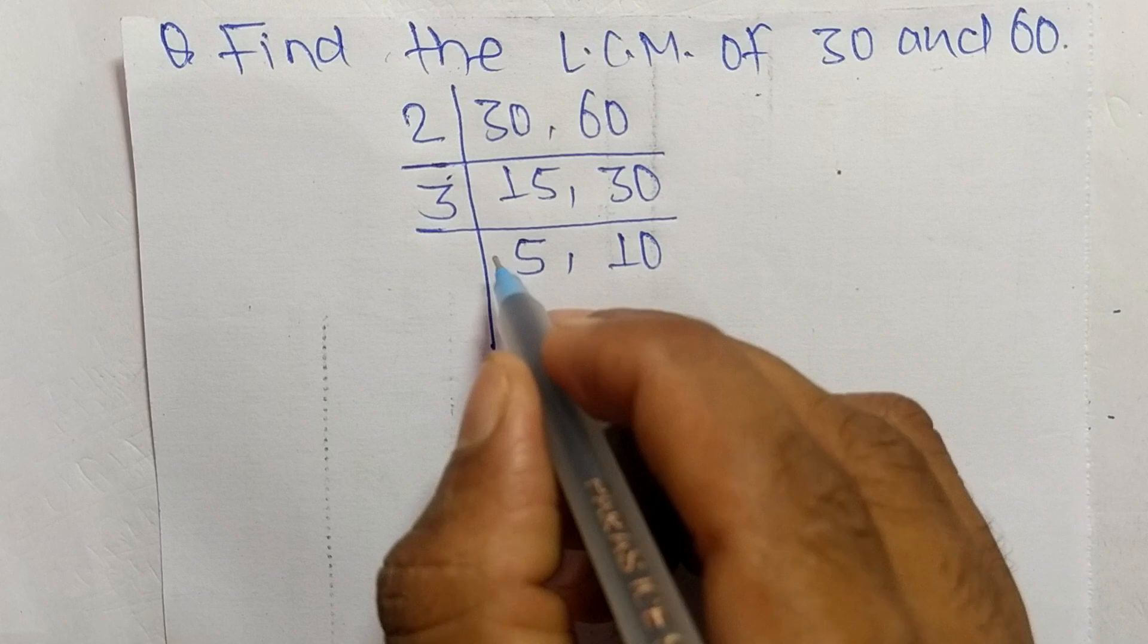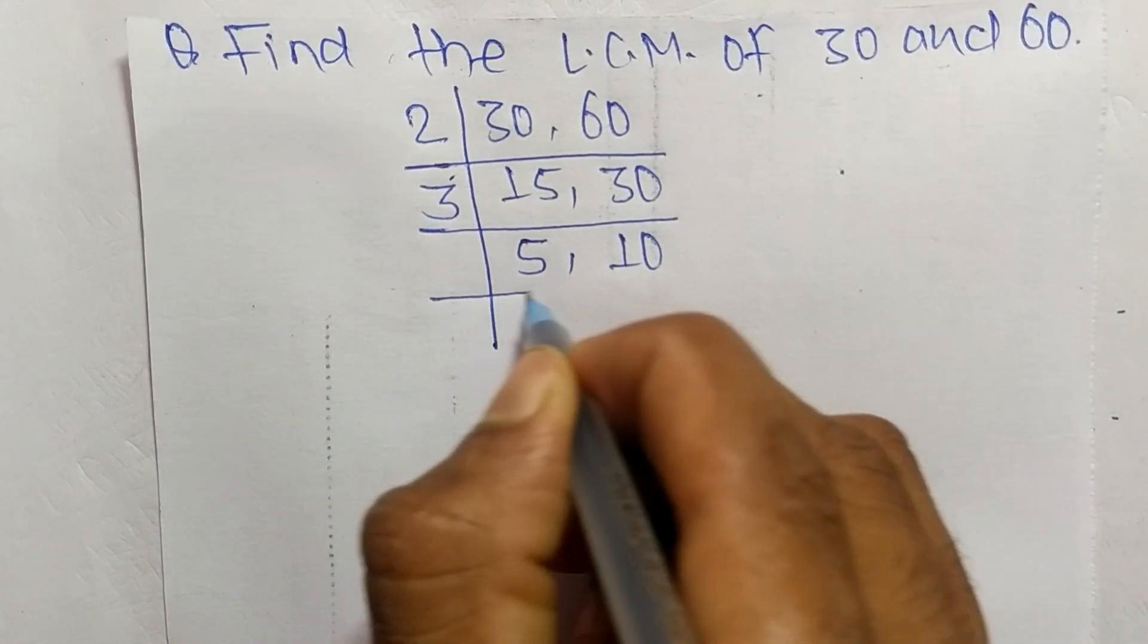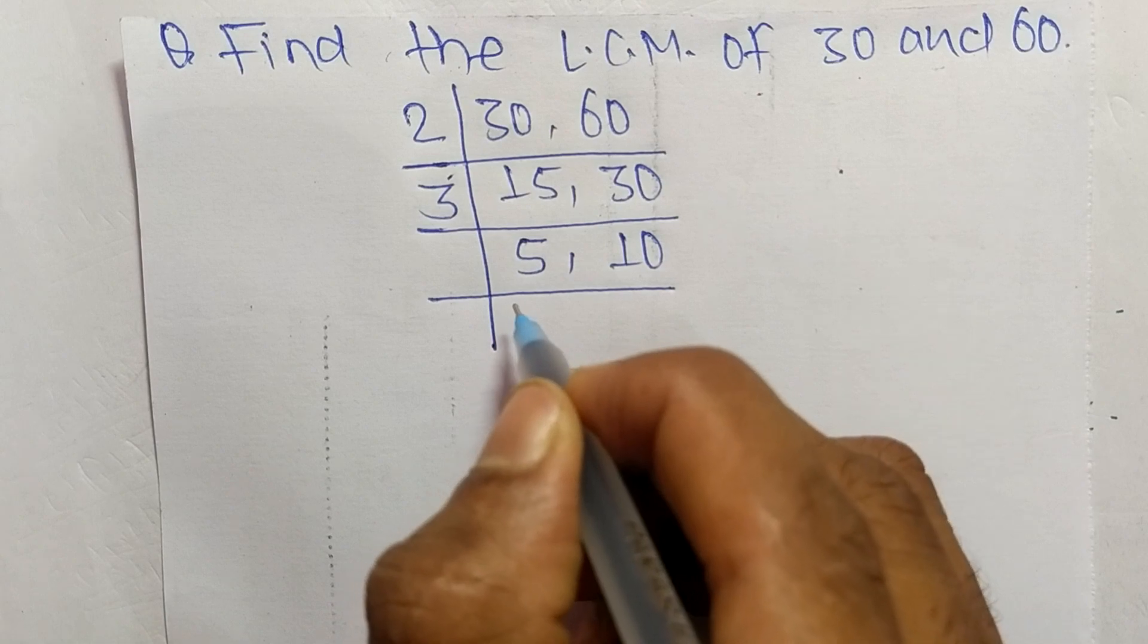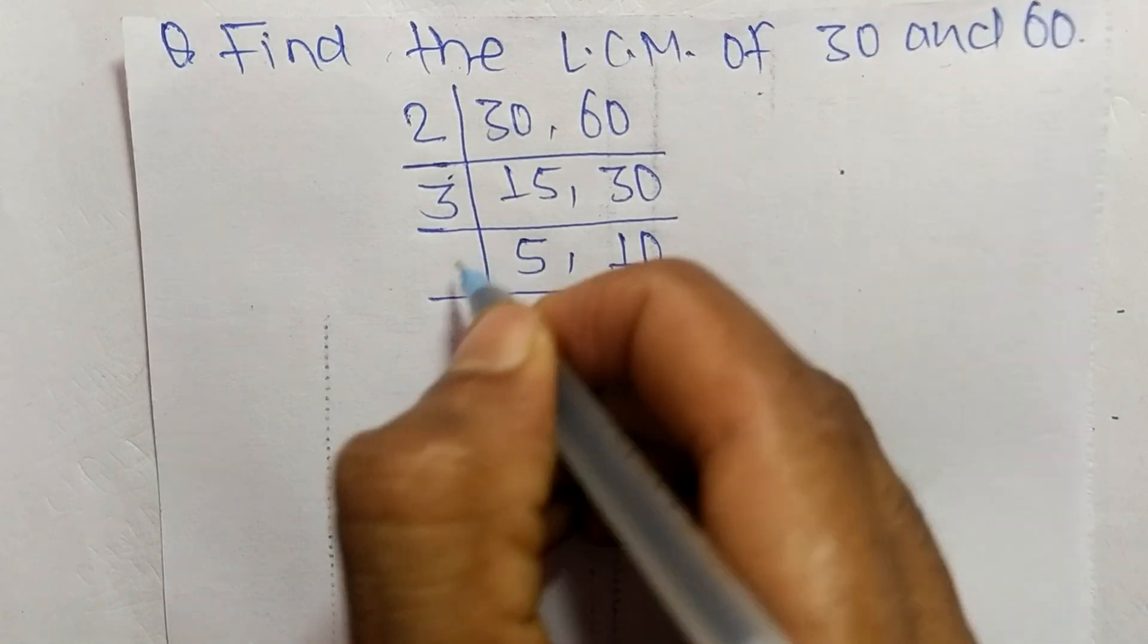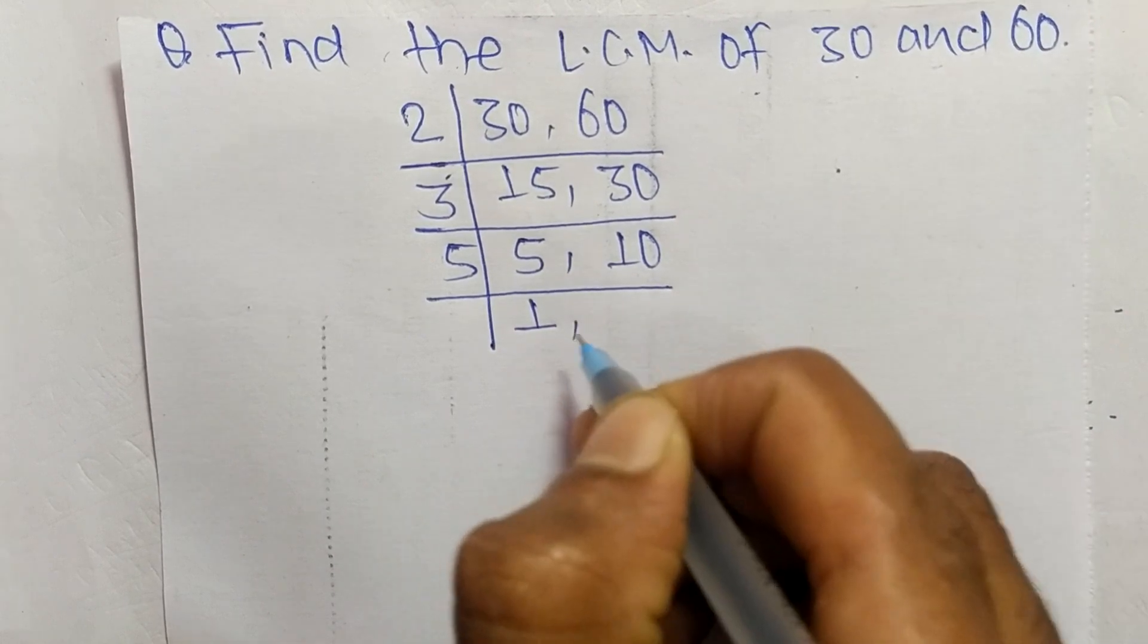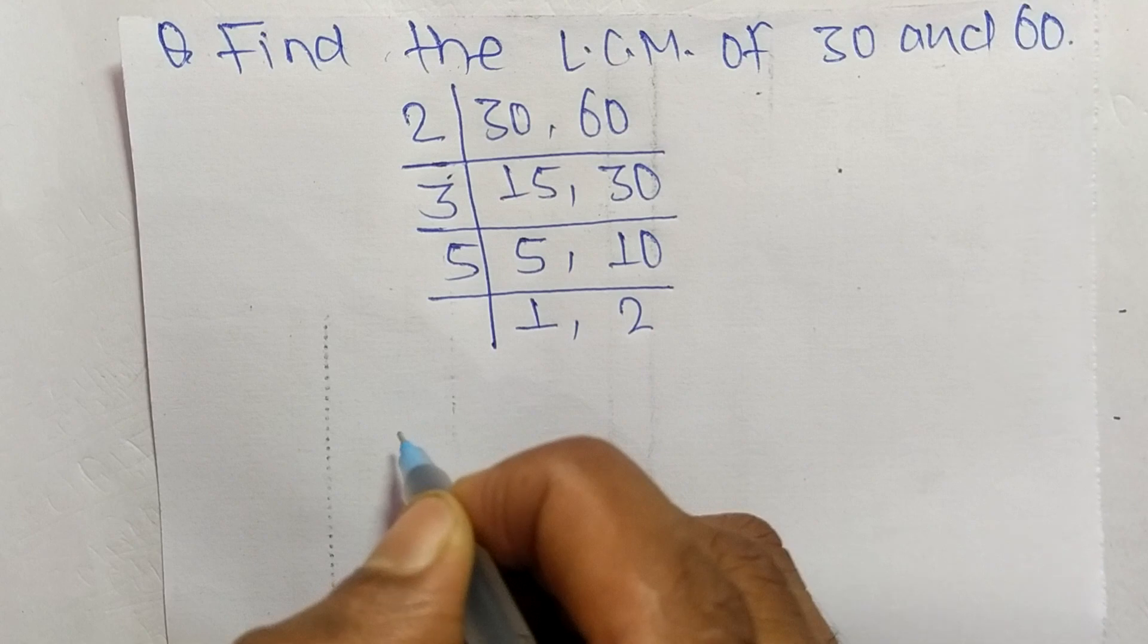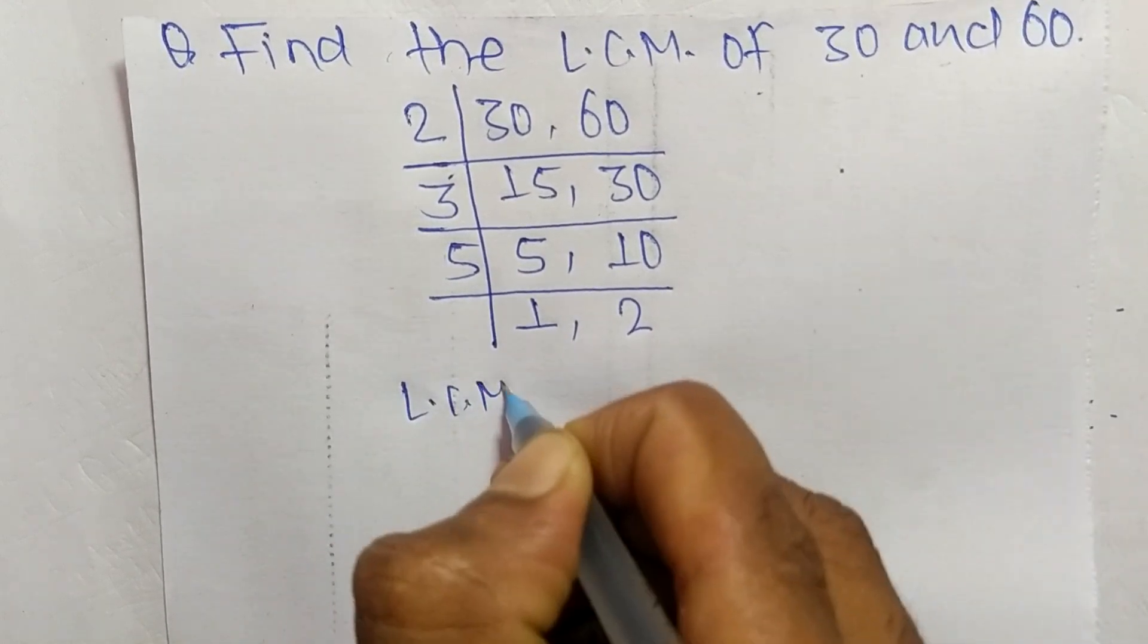Now 3 can't exactly divide 5 and 10, so the number greater than 3 that can divide 5 and 10 is 5. So 5 times 1 equals 5, and 5 times 2 equals 10. The LCM is equal to, from this part, 2 times 3 times 5, and from this part it is 1 times 2.